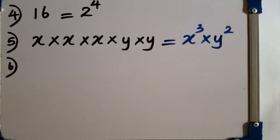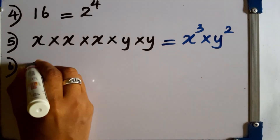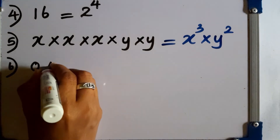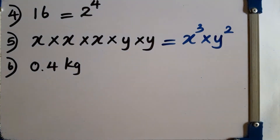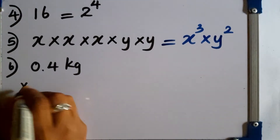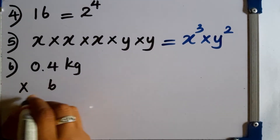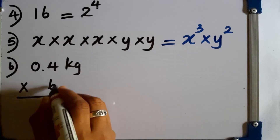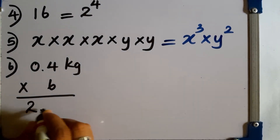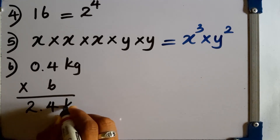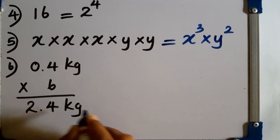Question number 6. The mass of a packet of milk powder is 0.4 kilograms. Find the mass of 6 such packets. We have to multiply this by 6. Then 6 into 4 is 24. We have to keep a decimal point. 2.4 kilograms is the answer.